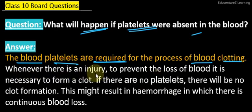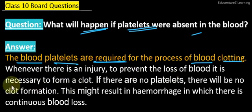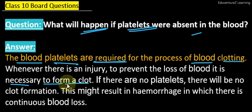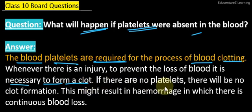Whenever there is an injury, agar hume koi chot lag jati hai, humare body se blood loss hone lagta hai. Suppose aapke hand mein kahi pe cut ho gaya hai aur wahan se aapka blood loss ho raha hai. It is necessary to form a clot at that time. Wahan pe clot form hona bahut important ho jata hai taaki blood wahan se stop ho jaye. Agar clotting nahi hogi to hamaara blood continuously flow us kati hui jagah se hota hi rahega.